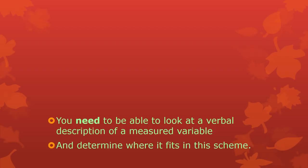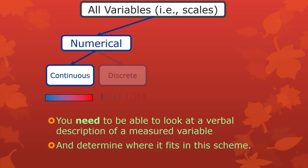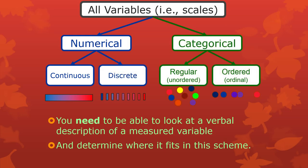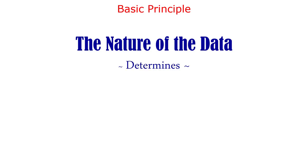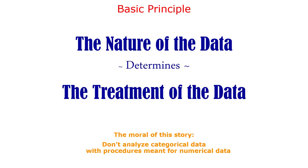You need to be able to look at a verbal description of a measured variable and determine where it fits in this scheme. You have four choices really — the most important are between numerical and the two types of categorical. Less important but still kind of important is continuous versus discrete. That should be your goal for after this video. I'll just end with this principle that you're going to see about 400 times.